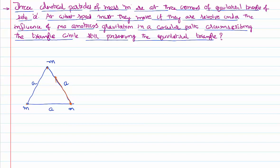On this particle, one particle applies a gravitational force and the other particle also applies a gravitational force. Both are equal in magnitude because the masses are the same and the distance of separation is also the same. In an equilateral triangle, every angle is 60 degrees. Using Newton's law of gravitation, F = Gm₁m₂/r², where r is the side a, the gravitational force in both cases is Gm²/a². So there are two such forces.